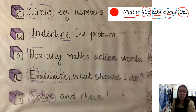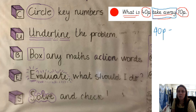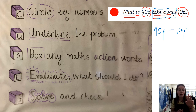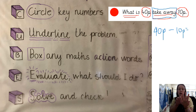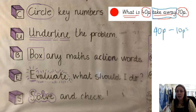So now I am going to solve and check. I am going to write out my number sentence: 40p take away 10p. Using my fingers I count: 10, 20, 30, 40 — and I take away the 10, leaving 10, 20, 30. That means my answer is 30p. And I have solved this red problem.